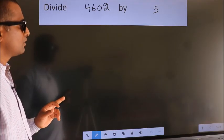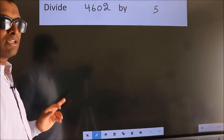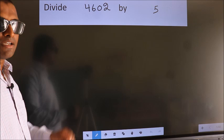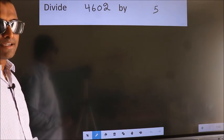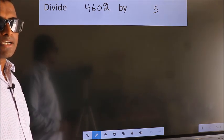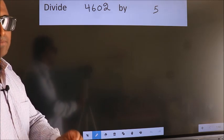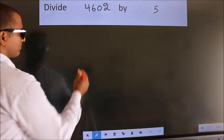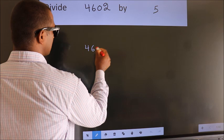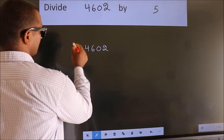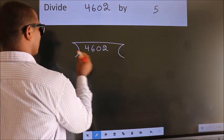Divide 4602 by 5. While doing this division, many do this mistake. What is the mistake that they do? I will let you know. But before that, we should frame it in this way. 4602 here, 5 here.